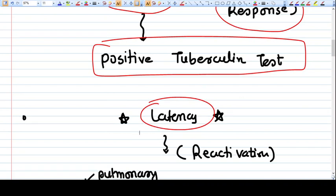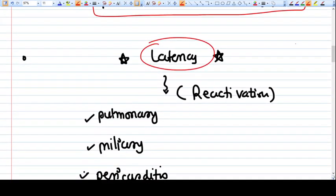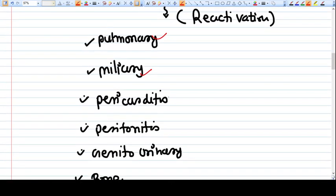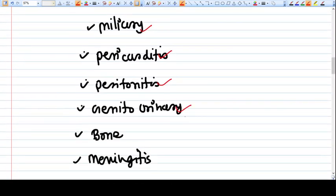A latency of some years, and then reactivation. After this reactivation, tuberculosis can affect almost any system of the body: pulmonary, miliary tuberculosis, pericarditis, peritonitis, genitourinary system, bones, meninges, neural systems - everything TB can infect.